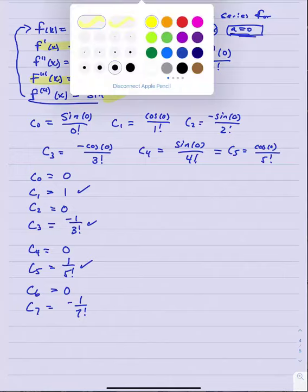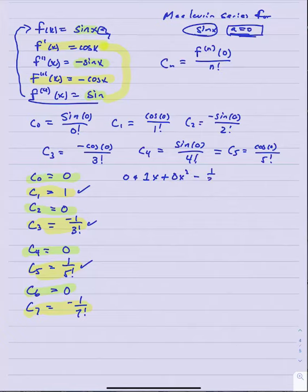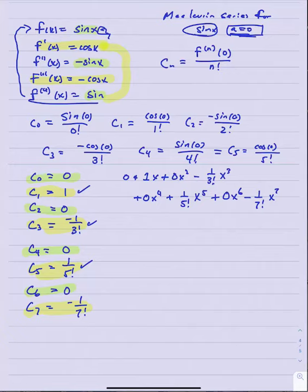Putting it all together, the Taylor series looks like x minus x cubed over 3 factorial plus x to the fifth over 5 factorial minus x to the seventh over 7 factorial and so on. The goal is always to find a closed-form summation formula that captures the pattern in these coefficients. The pattern is clear: we only pick up odd powers, and all even powers disappear.